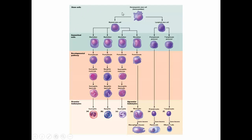In the formation of white cells, the hemocytoblast grandmother cell produces committed myeloid daughter cells, which can become eosinophils, basophils, neutrophils, or monocytes. The other stem cell is the lymphoid stem cell, which produces B lymphocytes and T lymphocytes.